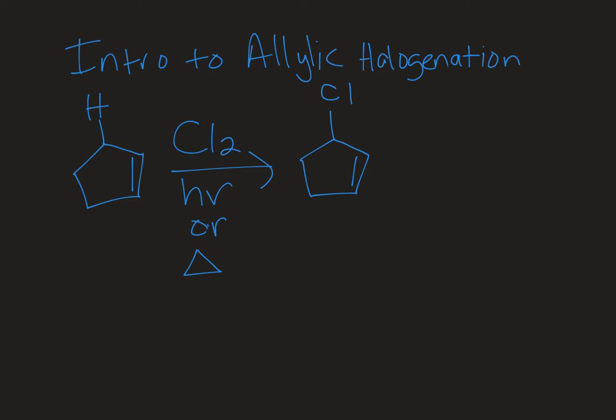Welcome to Chemistry with Caroline. In this video, we're going to look at allylic halogenation. So this is a substitution reaction. We're substituting out a H for a halogen, and if we're going to add chlorine, we can just use Cl2 as a reagent. And this is done either in a photochemical way, so using light energy, or we can heat it.